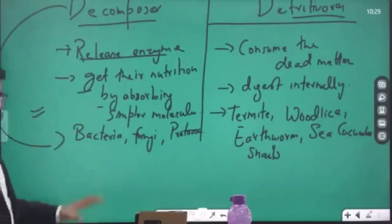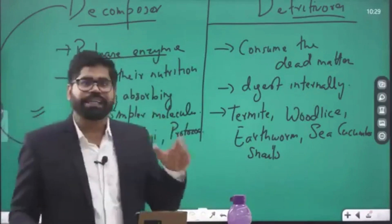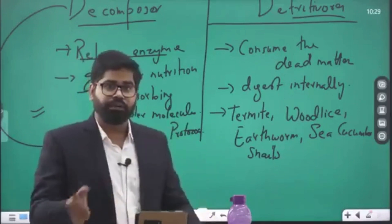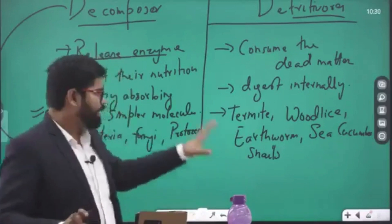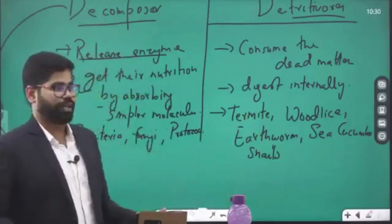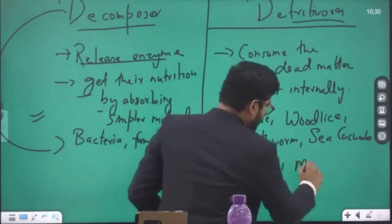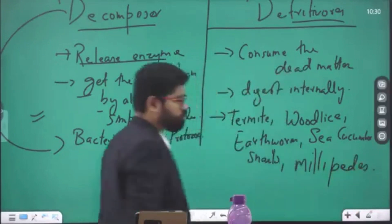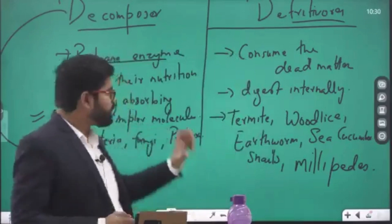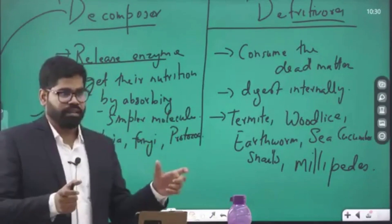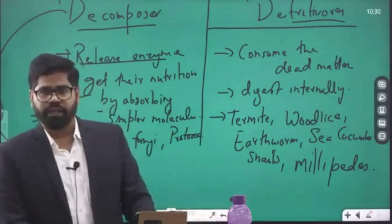Remember the key difference: decomposers release enzymes onto dead and decaying matter, and once it is broken down into simpler pieces, they absorb it. In the case of detritivores, they consume the dead matter, digest it internally, and then get their energy. Examples of detritivores include termites, wood lice, earthworms, sea cucumber, millipedes, snails, dung beetles, and even some cockroaches — though cockroaches are mainly called scavengers and are not strictly classified as detritivores.